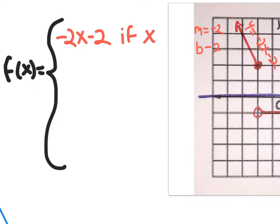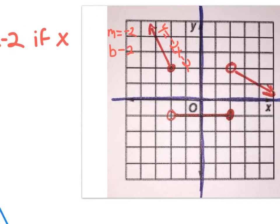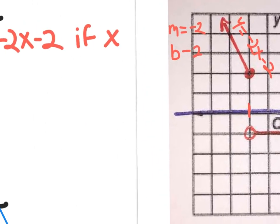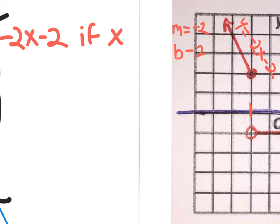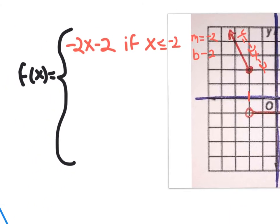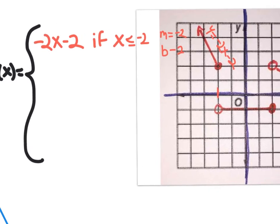If x is what? Let's think about that. The x value right here is negative 2, and this graph goes to the left, so it's less than the negative 2 value. We need to say if x is less than or equal to negative 2. Why did I put the or equal to? Because this is a solid dot, so it's a solid line underneath your inequality. So ladies and gentlemen, we have the first piece of our piecewise function. Let's move on to the second piece.